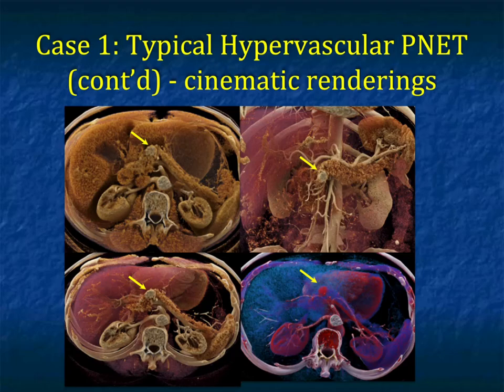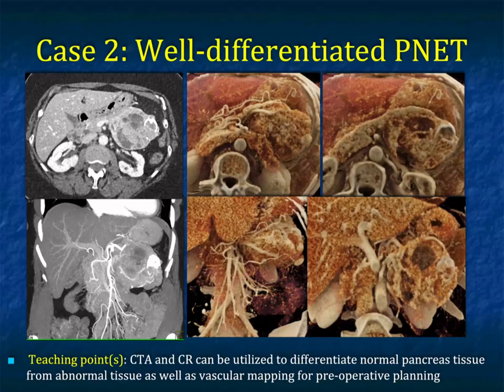Here's the same lesion on CT, and then with cinematic rendering — very nicely showing the lesion. You can see it with a range of cinematic renderings. Very small lesions can be brought out with cinematic rendering by looking for changes in texture based on vascularity.